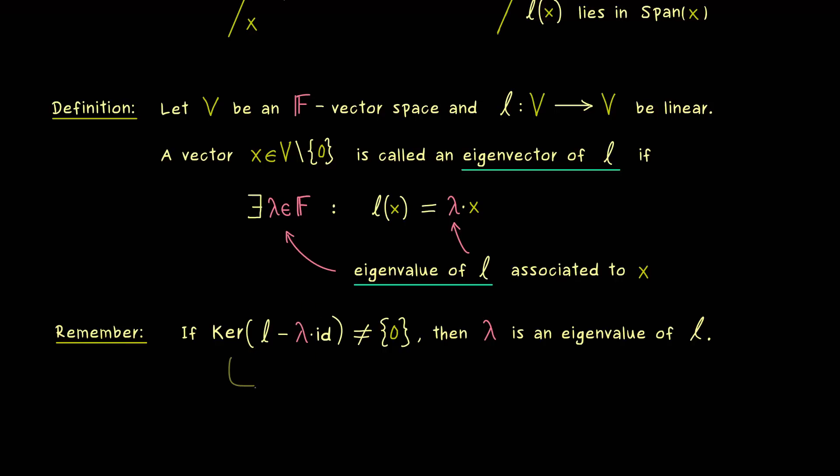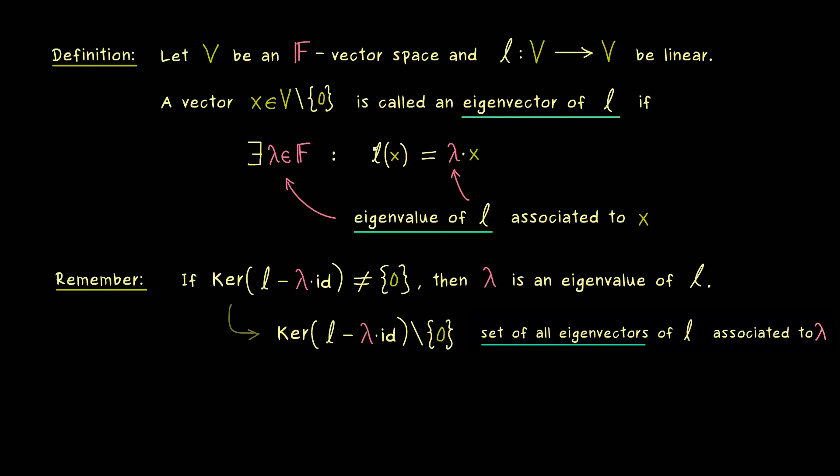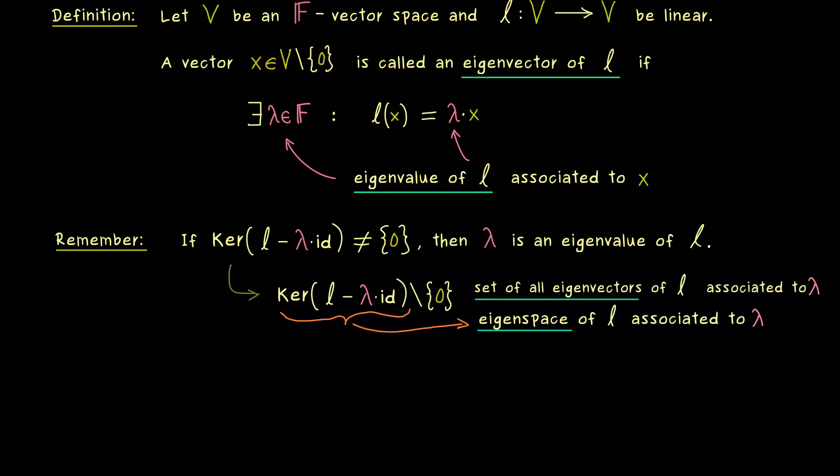And moreover in this case we always have infinitely many possible eigenvectors to a given eigenvalue. Namely this whole kernel without the zero vector describes all the eigenvectors. Hence this is what we call the eigenspace of the linear map l associated to the eigenvalue lambda. So you see an eigenspace becomes a subspace of our vector space V if we add the zero vector to it.